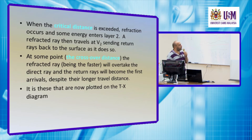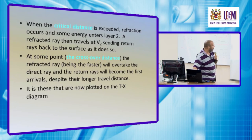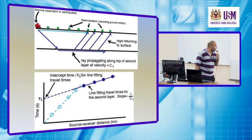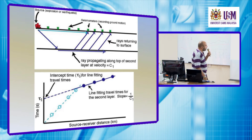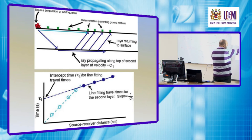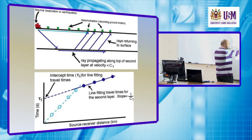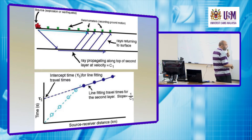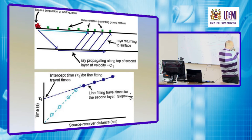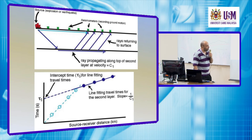This is what is now plotted on the TX diagram. The refraction energy starts here; this distance is called the critical distance for refraction, and then refraction starts. They intersect at the crossover distance; after the crossover distance the refraction energy becomes the first onset.